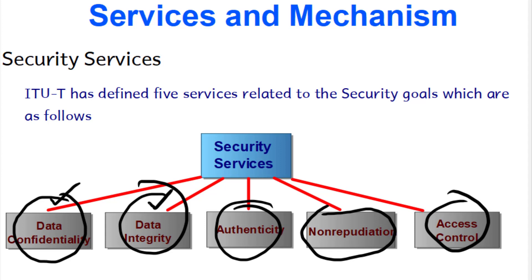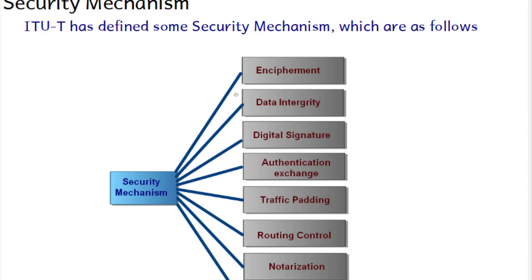The fifth service is access control. This ensures that access to resources is given according to the roles people play in an organization. For example, some users may only be allowed to read a file, some to write, and others to create or modify files. Access control defines how much access is given to whom.